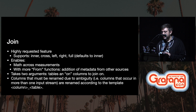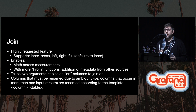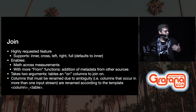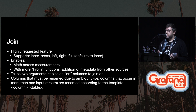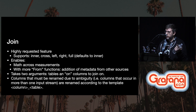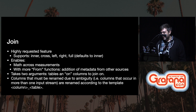The join function takes two arguments: the tables that you'd like to join — right now it only takes two tables — as well as the on column, which is the columns that we want to join on. Columns that need to be renamed due to ambiguity during joins: columns that occur in more than one input stream end up getting renamed according to the template column-underscore-table. That's another thing to keep in mind as you're using joins.